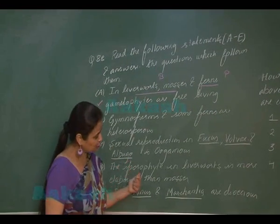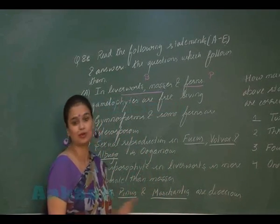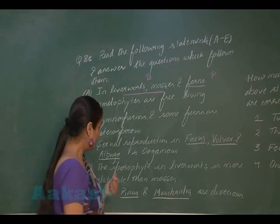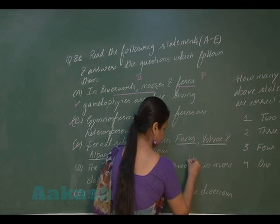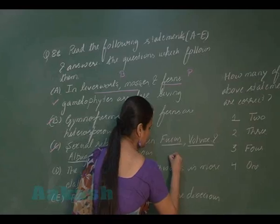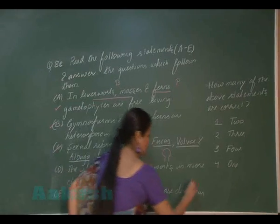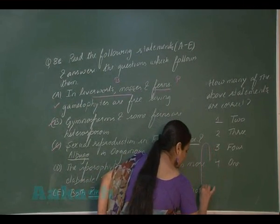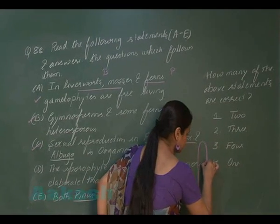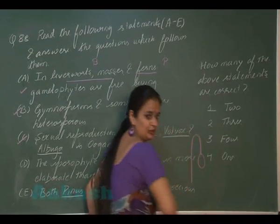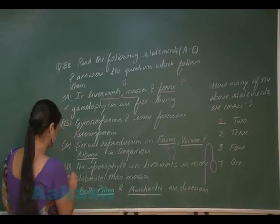Option D: sporophyte in liverworts is more complex and elaborate than mosses — this is incorrect. In liverworts, the sporophyte consists of foot, small seta, and capsule. In mosses, the sporophyte has foot, long seta, and capsule. So the more elaborate sporophyte is present in mosses, not liverworts. This option is incorrect.